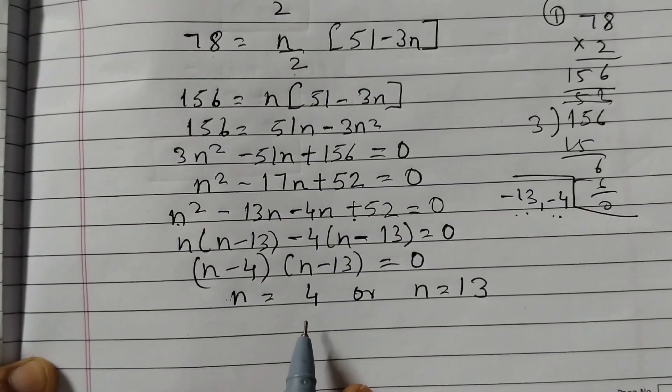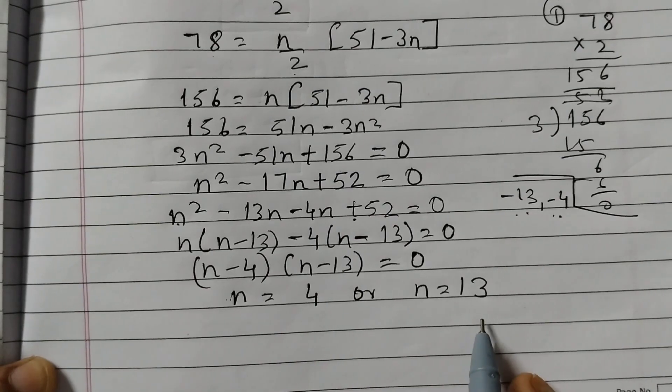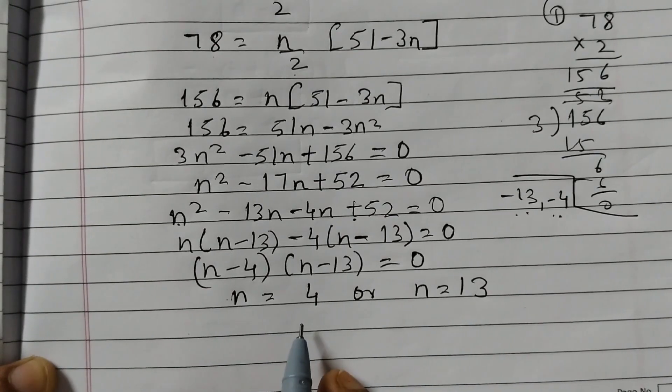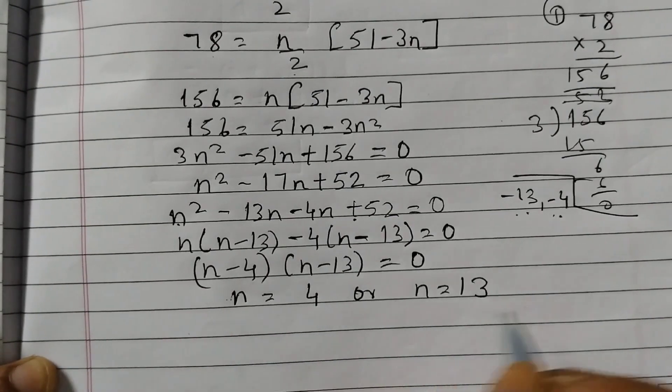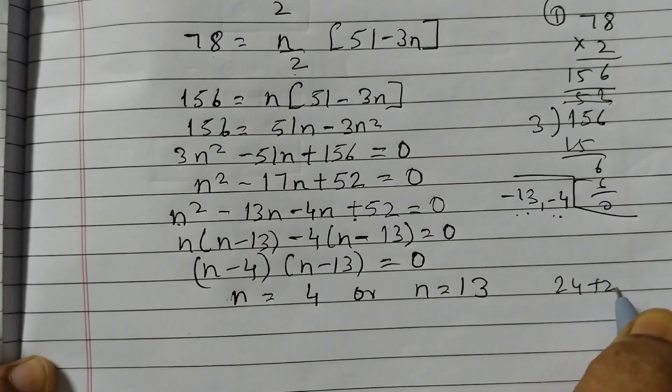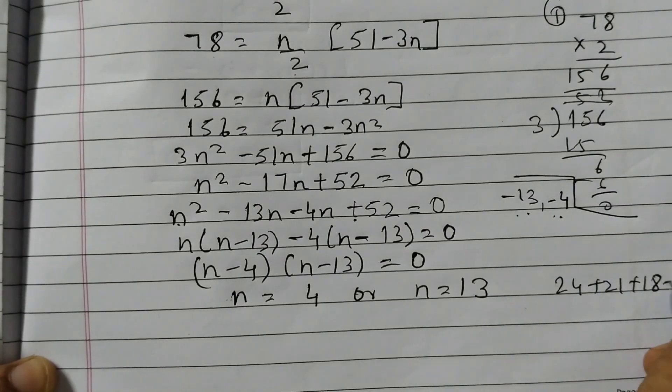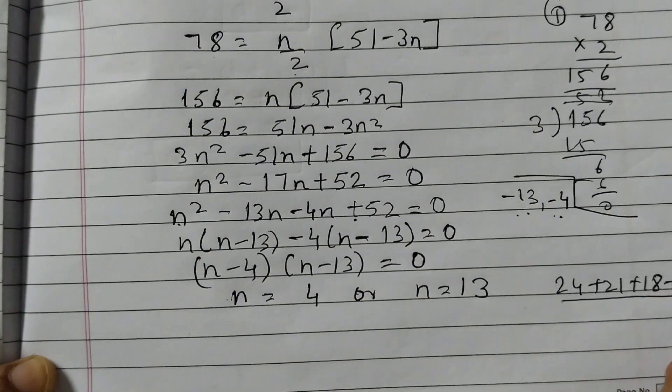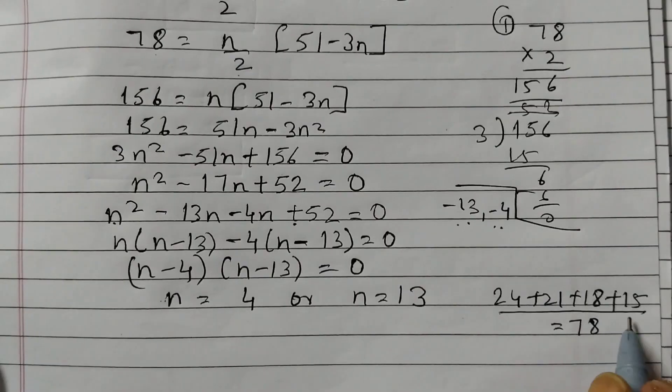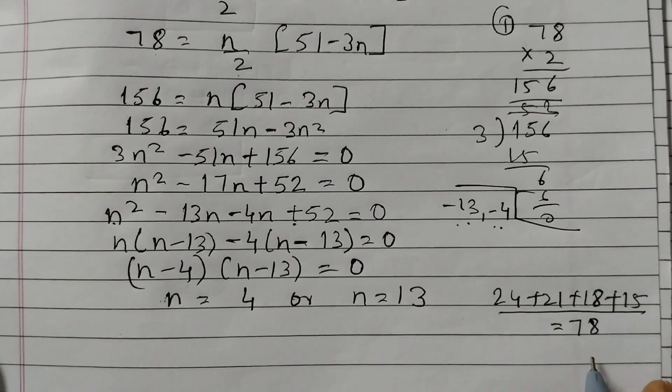So the number of terms would be 4 or 13. That means when we take 4 terms like it is given 24 plus 21 plus 18, the next term will be minus 3. So that's 15. When you add all these 4 numbers, you get 78.